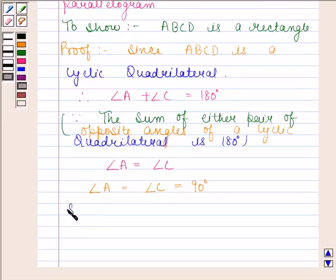Similarly, as ABCD is a cyclic parallelogram, therefore angle B plus angle D is also equal to 180 degrees.